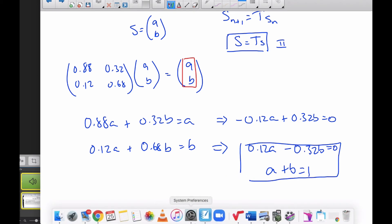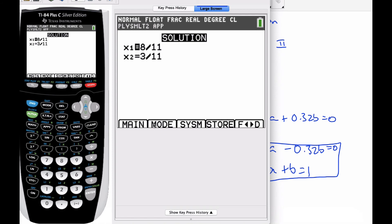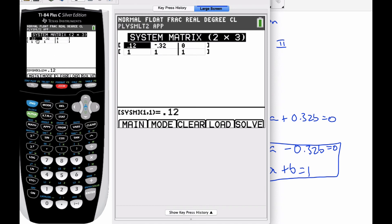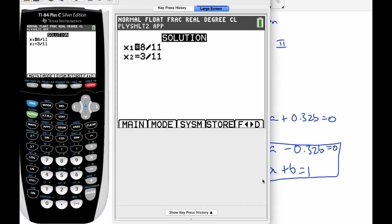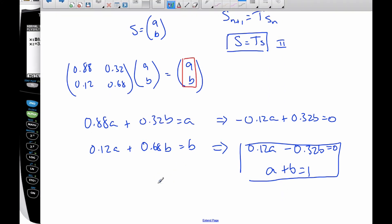But now it's just a matter of solving this system of equations here. If I go to my calculator, I go to polysimultaneous, and you can see I've already put the values into my calculator. And if I hit solve, I get 8/11 and 3/11. So A is equal to 8 over 11, and B is equal to 3 over 11. And this is our steady state probability matrix, S.